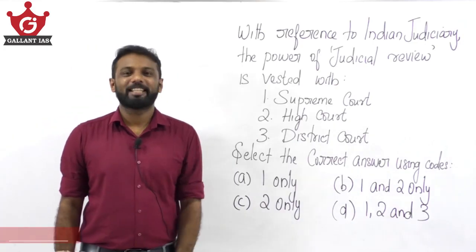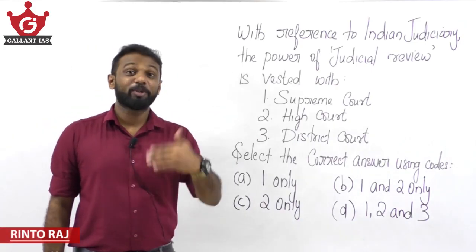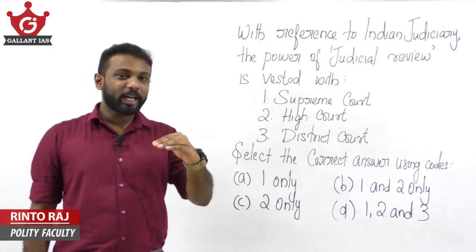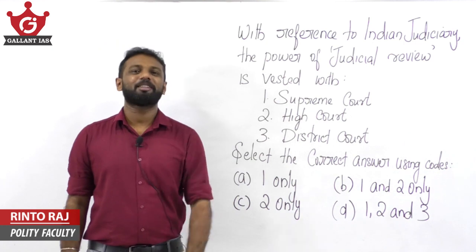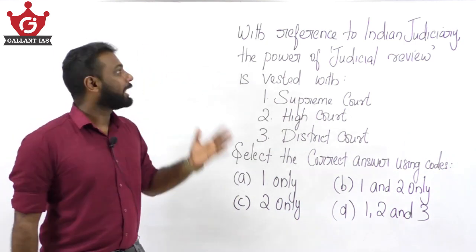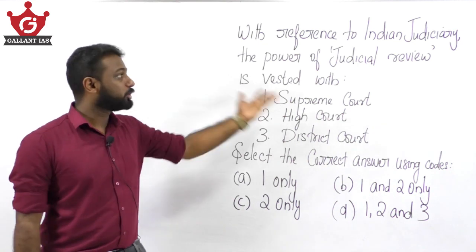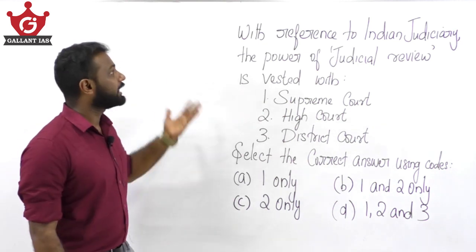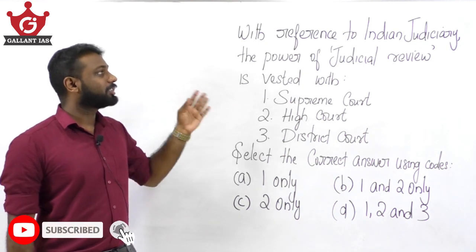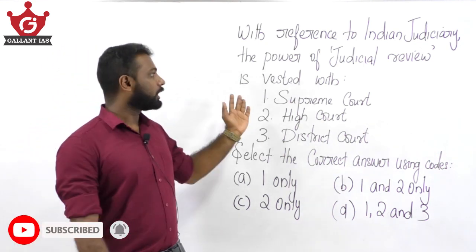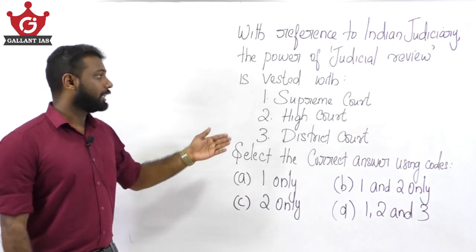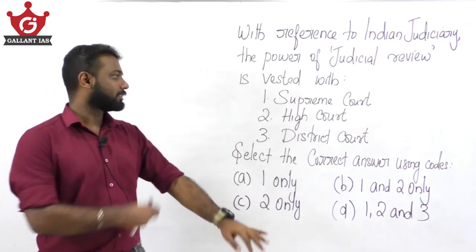Hi y'all, a single question can decide whether you are in or out for the coming main examination. Today we are going to discuss that particular single question which can help you clear prelims this year. The question is regarding the concept of judicial review: with reference to the Indian judiciary, the power of judicial review is vested with (1) Supreme Court, (2) High Court, (3) District Court — select the correct answer.